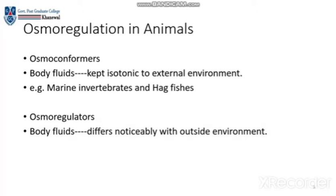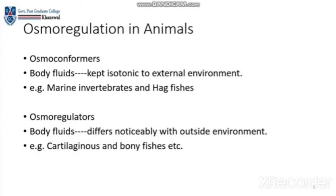The next category is osmoregulators. Their body fluids differ noticeably from the outside environment, and on a constant basis they change their body fluids to adjust to the environment. Examples of osmoregulators include cartilaginous fishes and bony fishes.